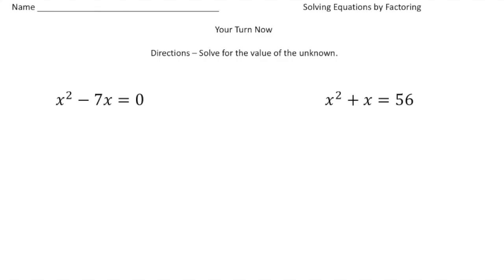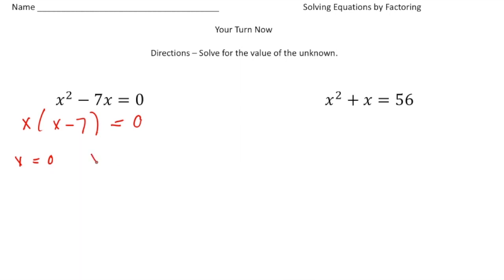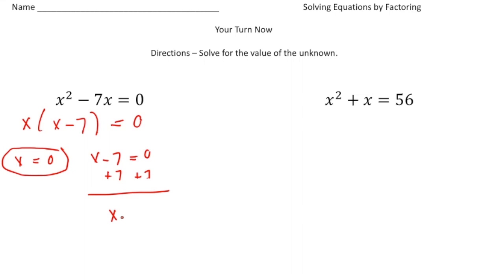Alright, welcome back. Let's see how you did with these problems. The first one, we have x squared minus 7x equals 0. I need to factor the left-hand side. Remember, you always want to look for the GCF, and this one has the GCF of x. So it's going to be x times x minus 7 equals 0. We have two factors: x and x minus 7. So x equals 0 is one solution, and for x minus 7 equals 0, I add 7 to both sides and get x equals positive 7 as the second solution.